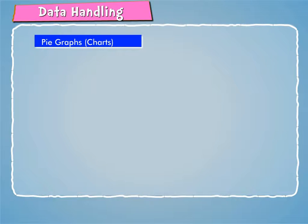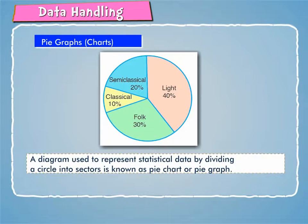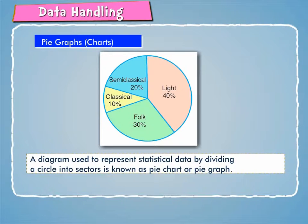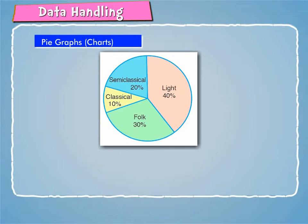Let us now learn about pie graphs. A diagram used to represent statistical data by dividing a circle into sectors is known as a pie chart or pie graph.